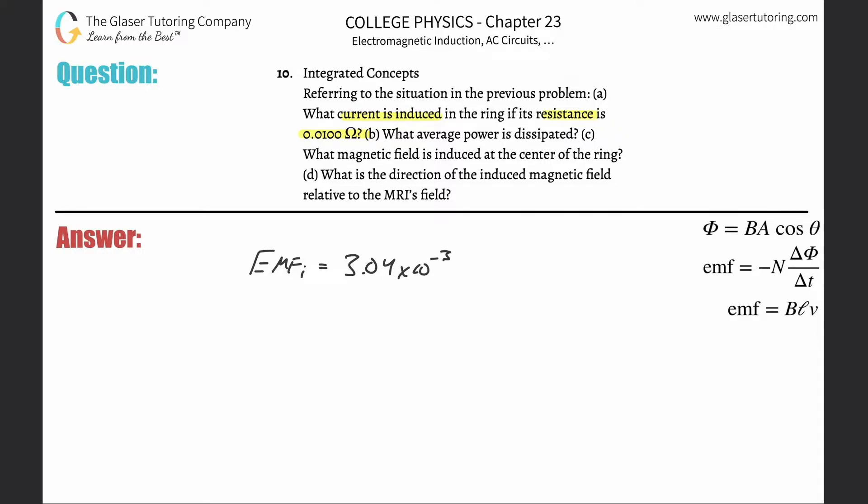Now we know EMF is basically voltage, and we know that voltage is equal to current times resistance. So if I had to find the current, I simply divide out the resistance on both sides. Here's another version of Ohm's law.